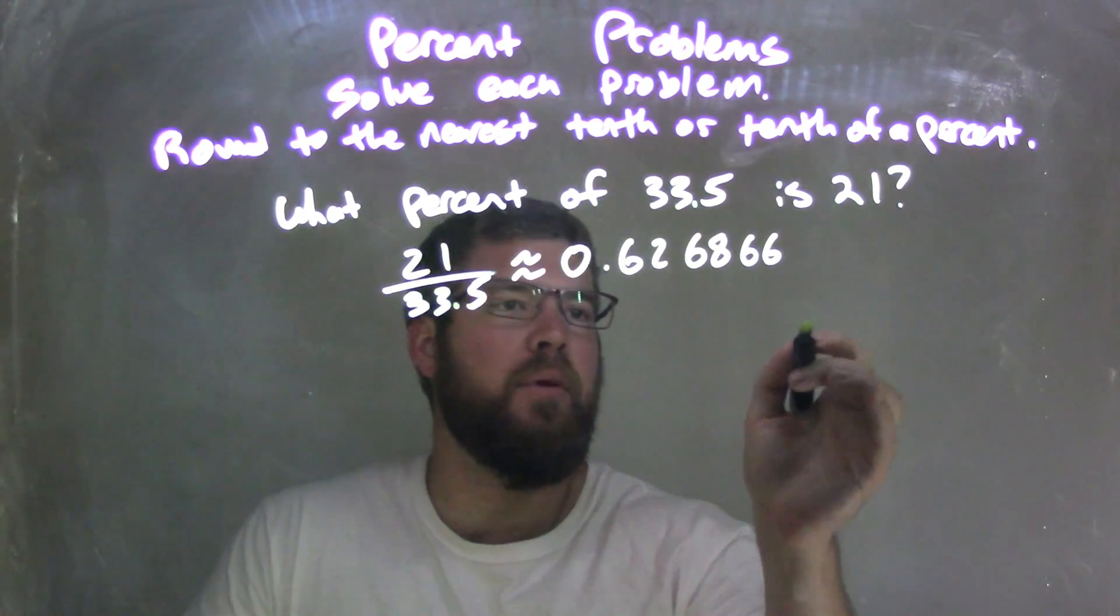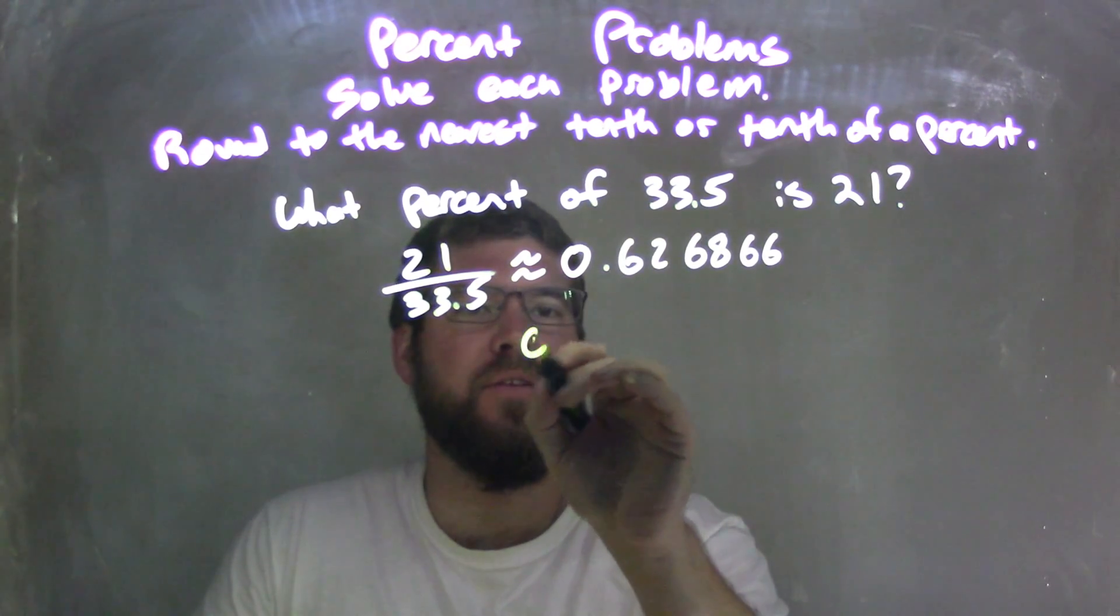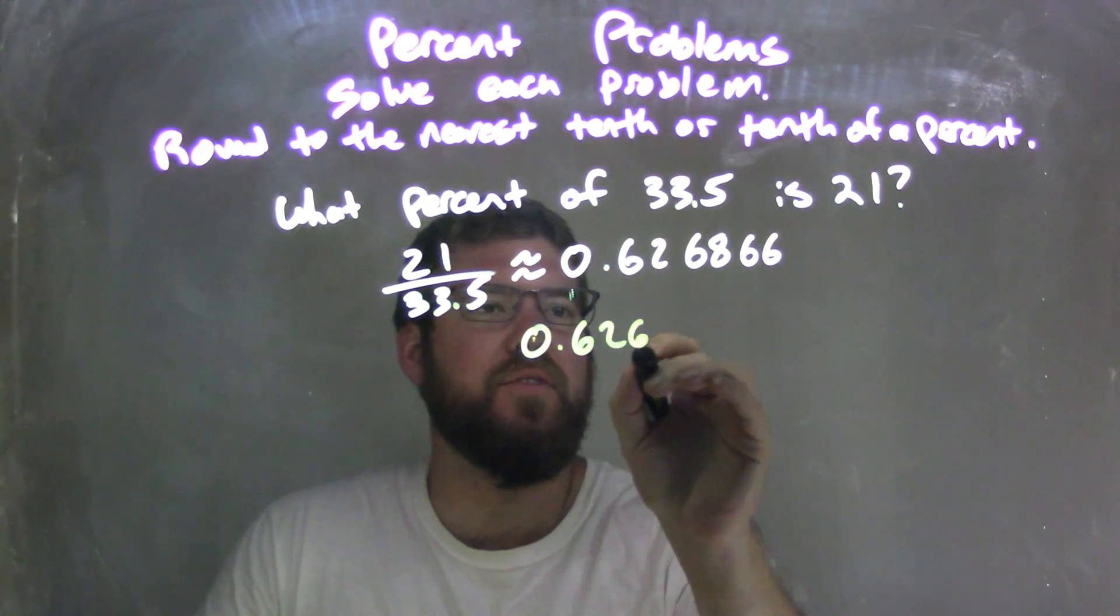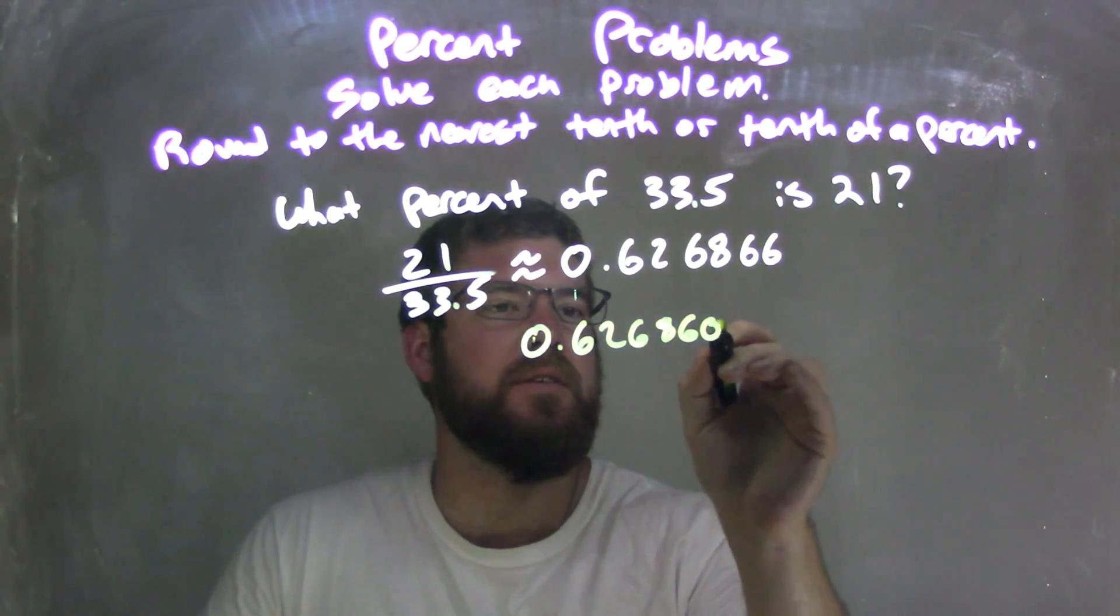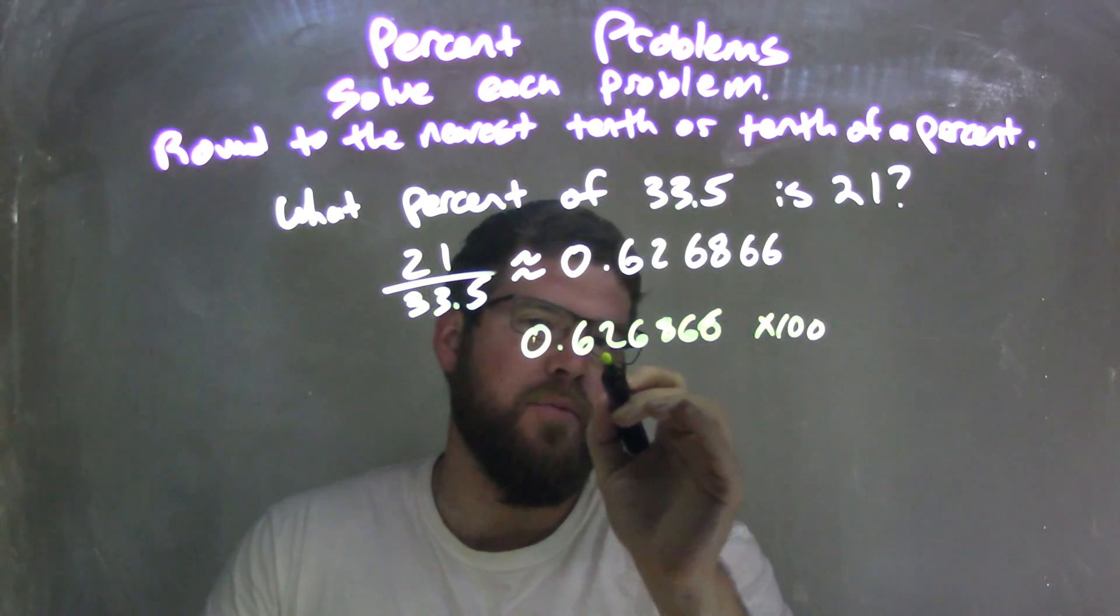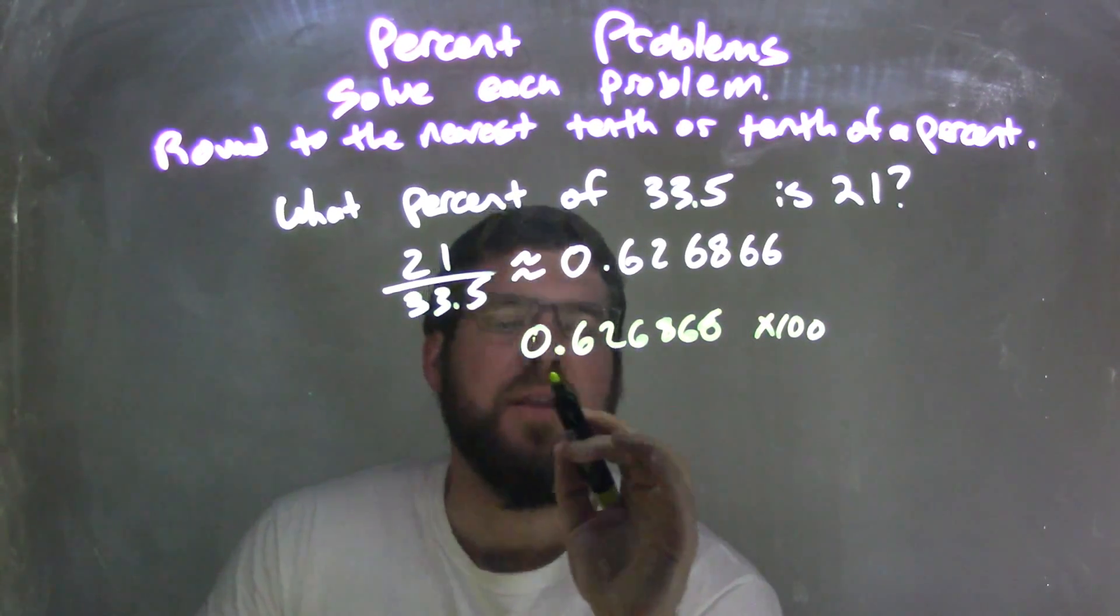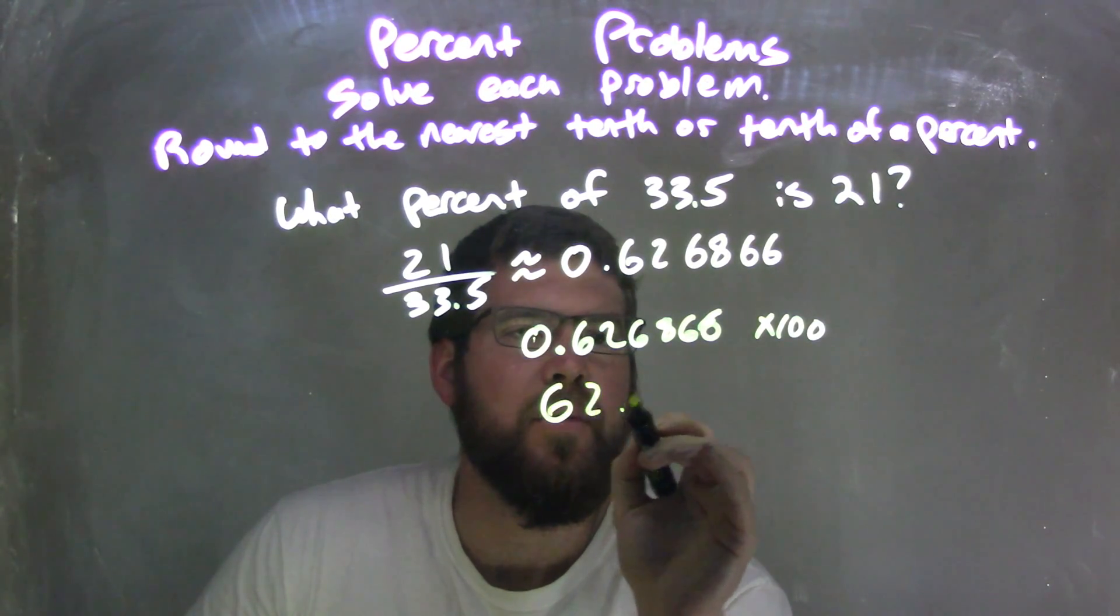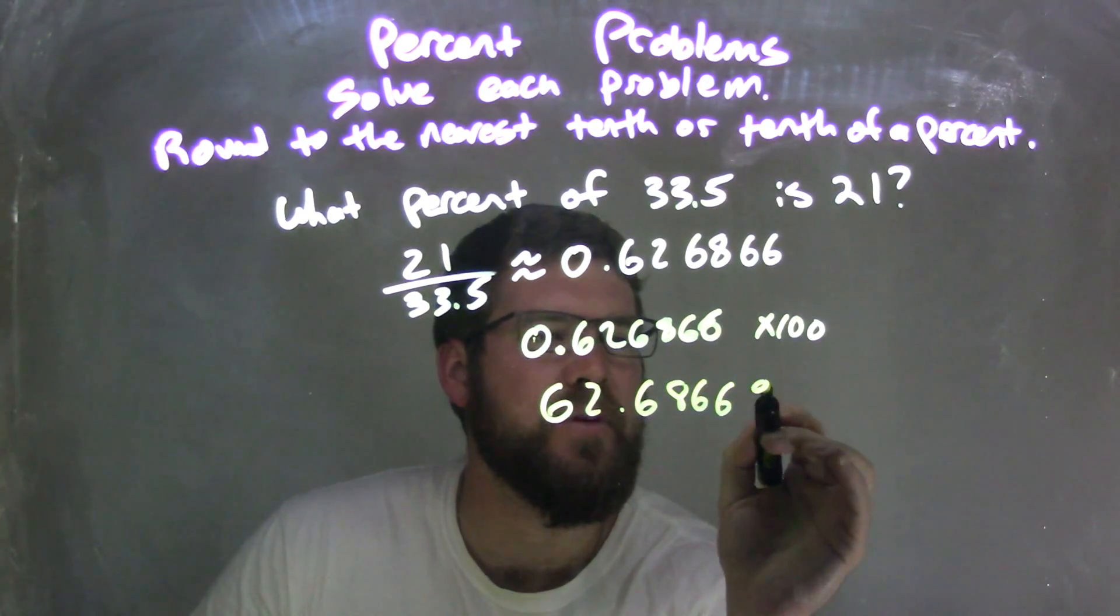So I'll multiply that by 100, so I take the 0.626866 times by 100, which really I just made a decimal place over two units, leaving me with 62.6866%.